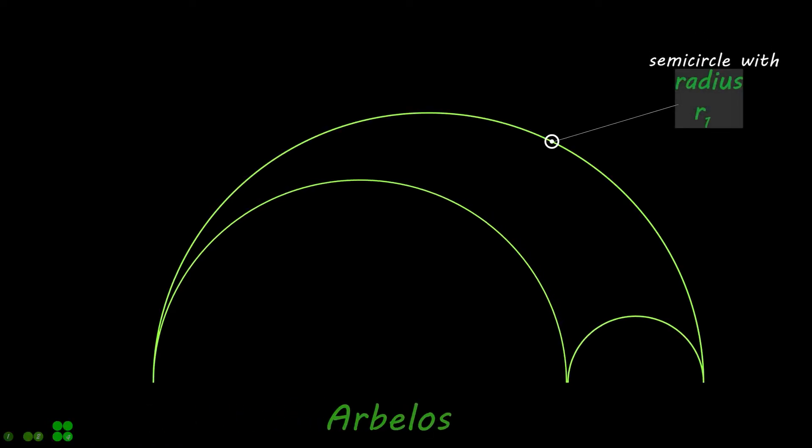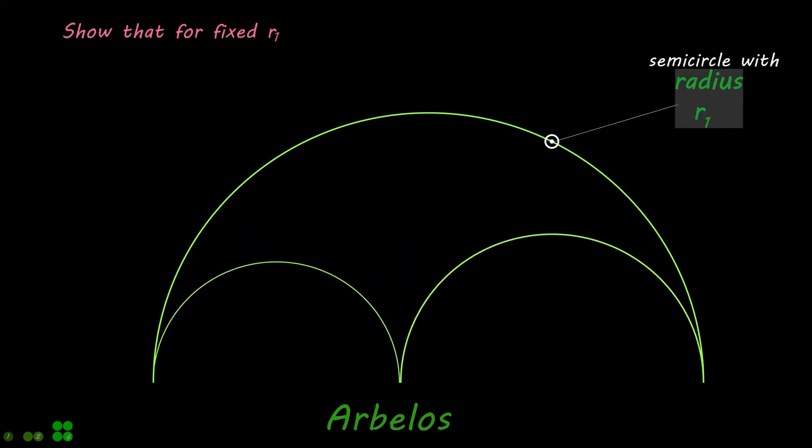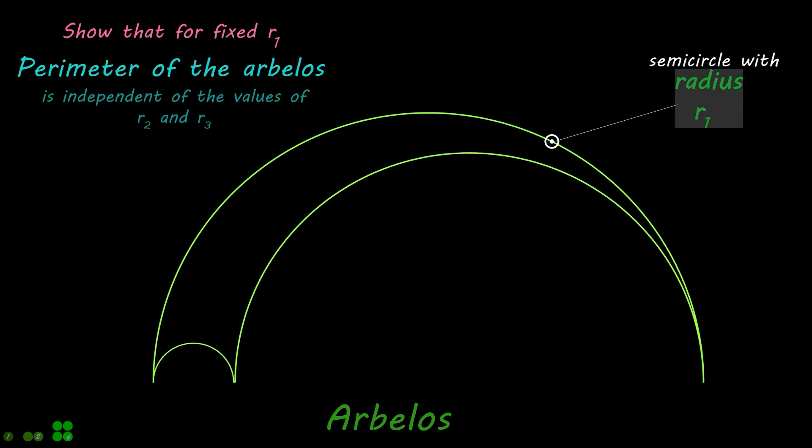A plain semicircular region of radius R1, from which semicircles of radius R2 and R3 are removed, is called Arbelos, as shown.